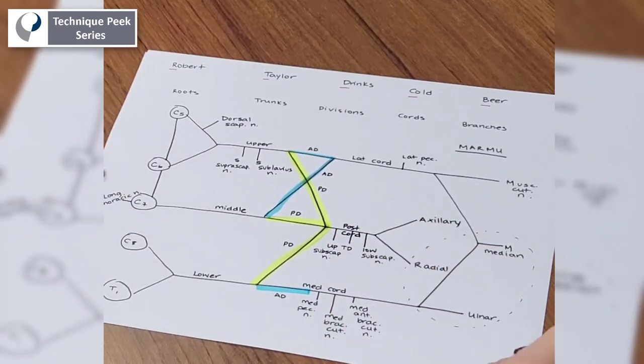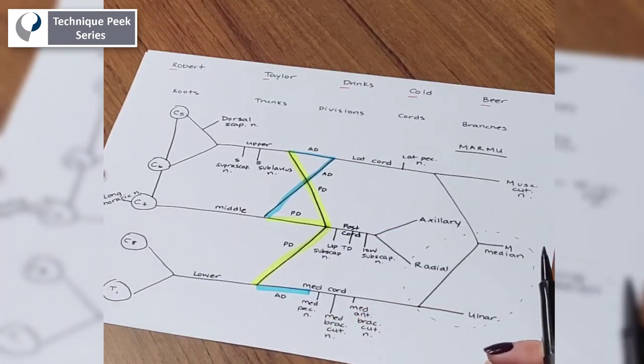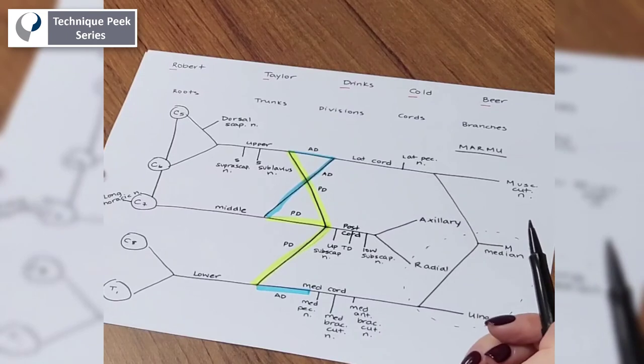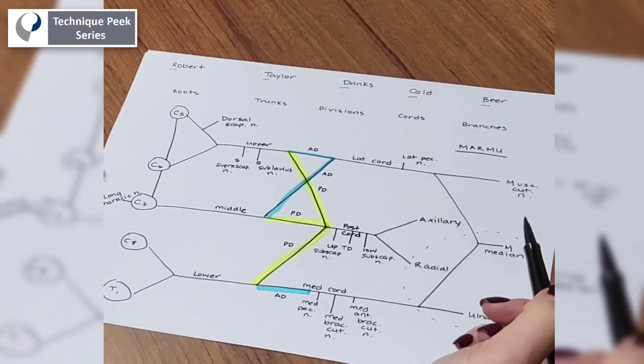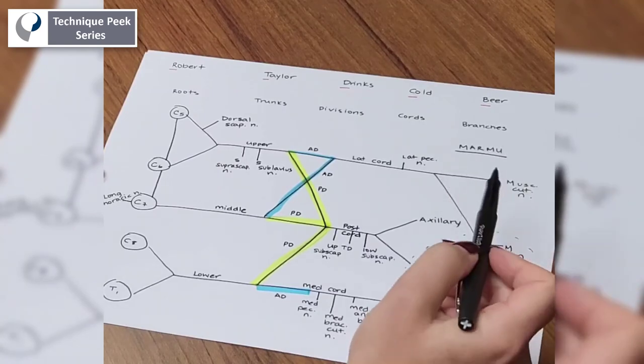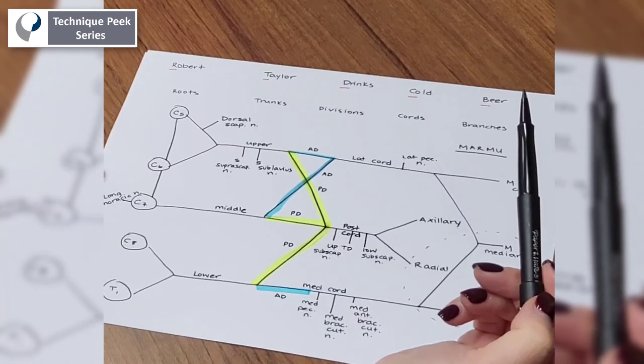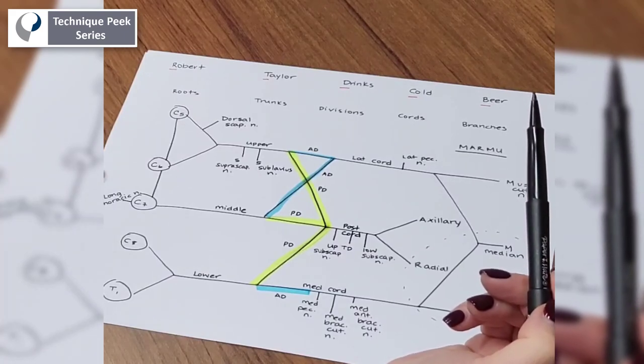And that's the brachial plexus. So if you create this, when you sit down to take your exam, obviously, as you practice it, you'll be able to do it more quickly rather. And then any questions about where your nerves generate from, you can easily follow your pathways back to those roots and answer the questions in a timely fashion. Hope this was helpful.